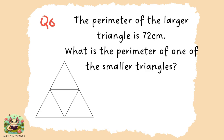Question six. The perimeter of the larger triangle is 72 centimetres and you can see that there are some smaller triangles within it. What would be the perimeter of one of those smaller triangles? The perimeter of the large triangle is 72 centimetres — you're trying to work out what the perimeter of one of the smaller triangles would be.